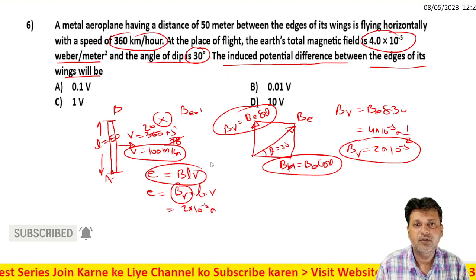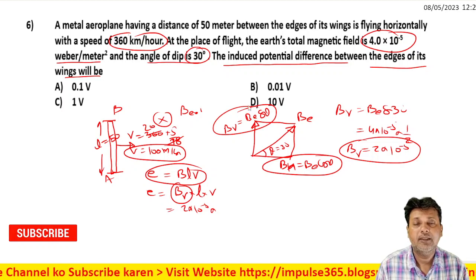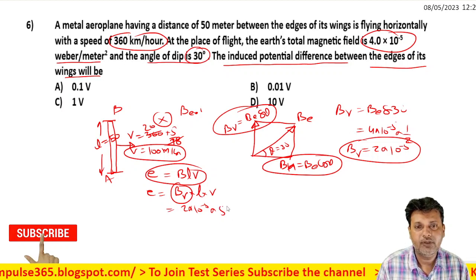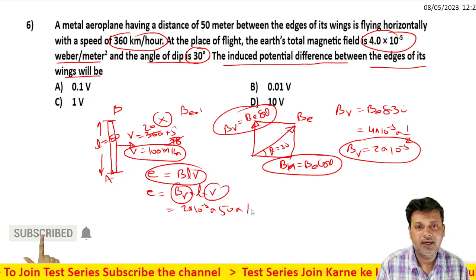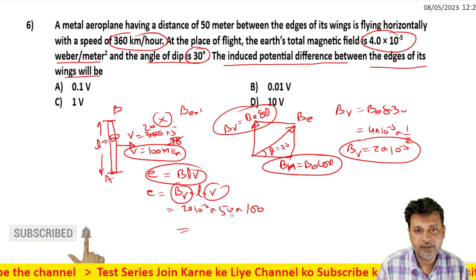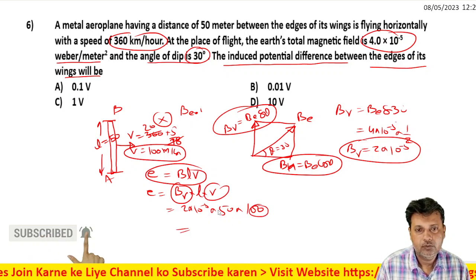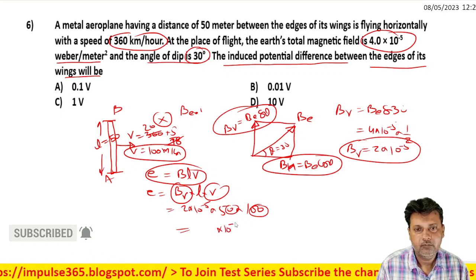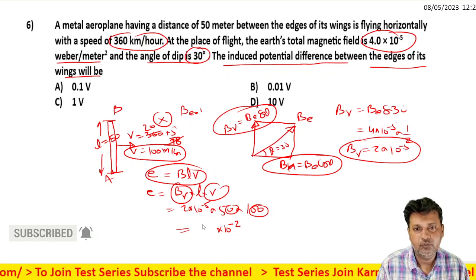The length of the wings is 50 meters and the velocity is 100 meters per second. Putting these values: EMF = 2 × 10^-5 × 50 × 100 = 10 × 10^-2 = 10^-1 volt.